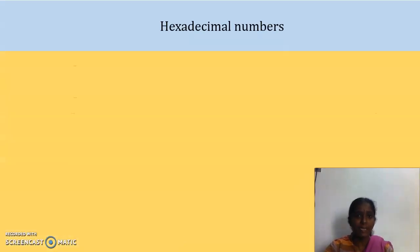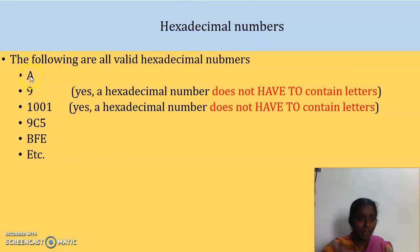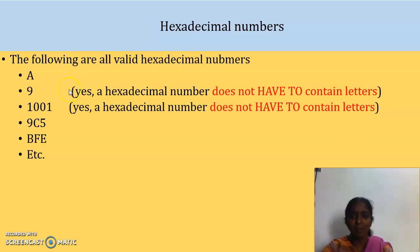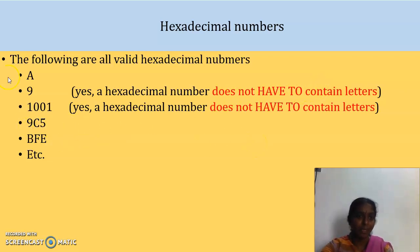So now, hexadecimal number — for example, A is a hexadecimal number. Is 9 a hexadecimal number? Yes, of course it is a hexadecimal number. Don't confuse — the hexadecimal does not have to contain both numbers and letters. That's wrong. It may have only numbers or it may have only letters. The hexadecimal number does not compulsorily need a combination of both numbers and letters.